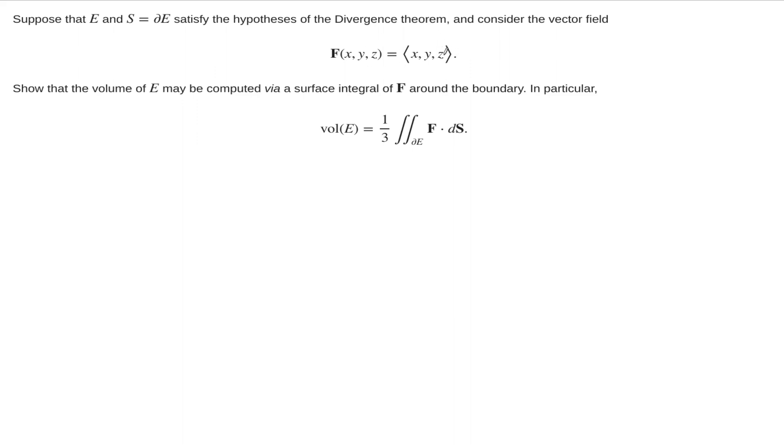So suppose we have this vector field, we're given this vector field x, y, z. Sometimes you might be asked to find a vector field like this, but a vector field x, y, z, very simple one. And we want to show that in terms of this vector field, the volume of the region E, the three-dimensional region E, can be computed by computing the flux of this vector field across the boundary of the surface, across the boundary surface of the solid region.